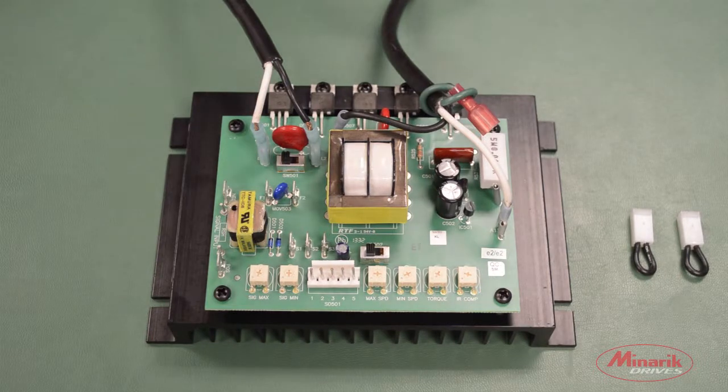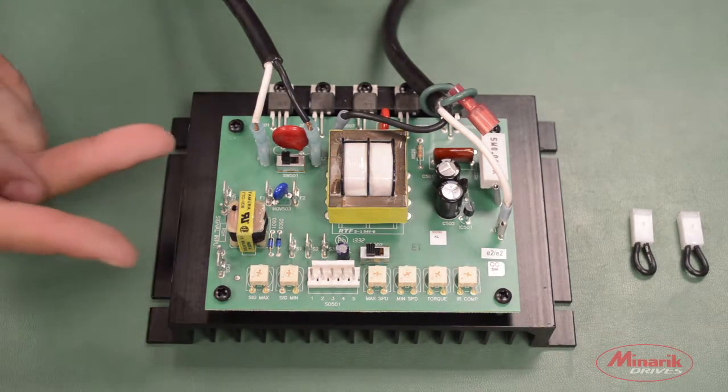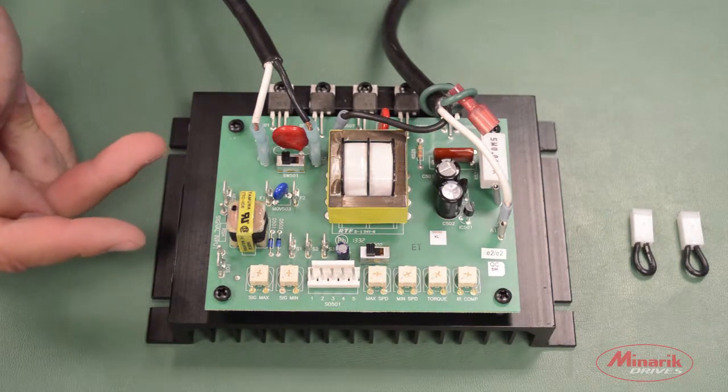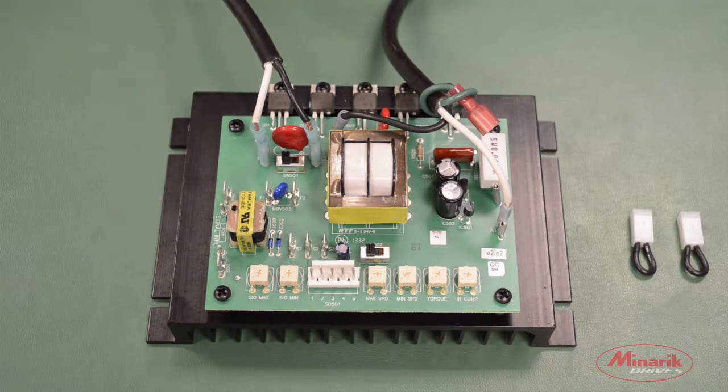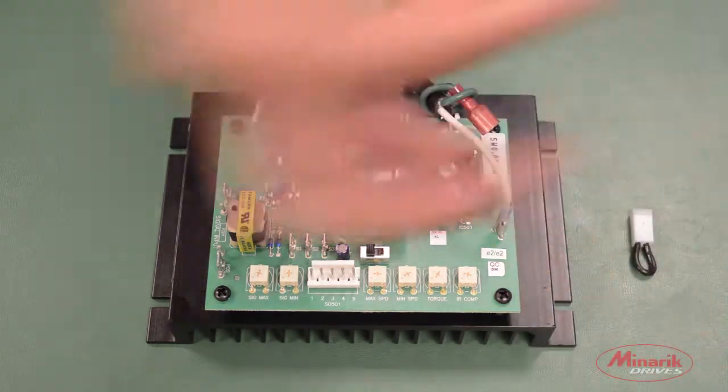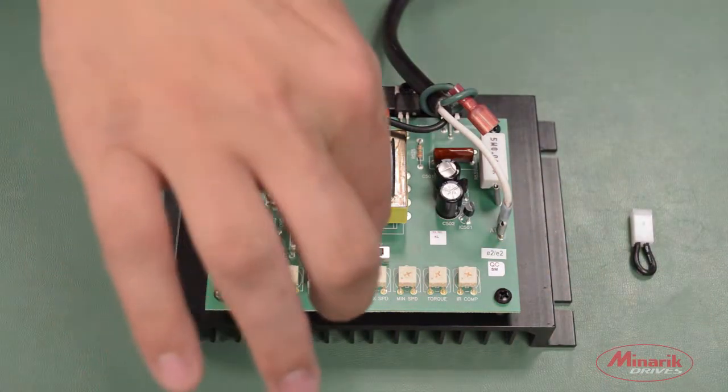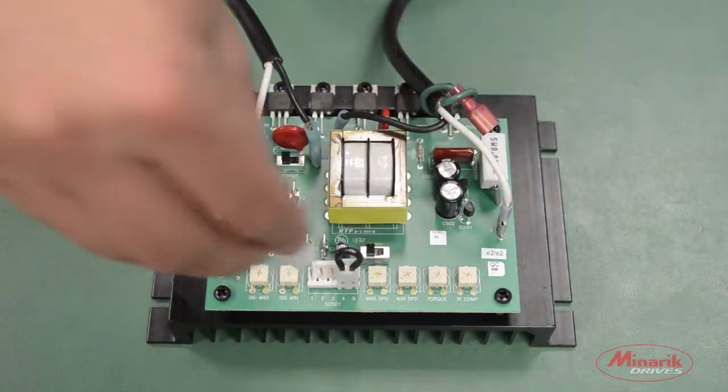The last mode is signal with ratio output mode. In this mode, the drive will follow the voltage input signal but also be proportional to the speed potentiometer. To put the drive in this mode, we are going to use a jumper to short pins 4 and 5 and pins 2 and 3.